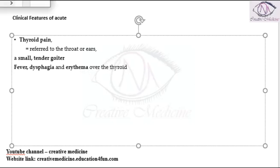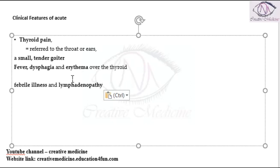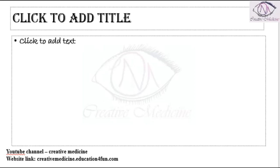Systemic symptoms can also be seen, like febrile illness, and lymphadenopathy may be present. These are the main clinical features of acute suppurative thyroiditis. Now, what about the complications?